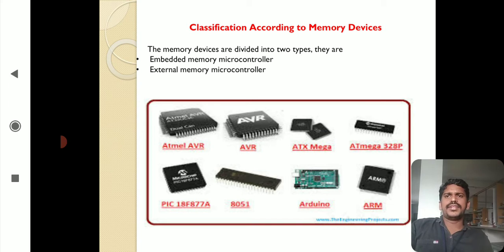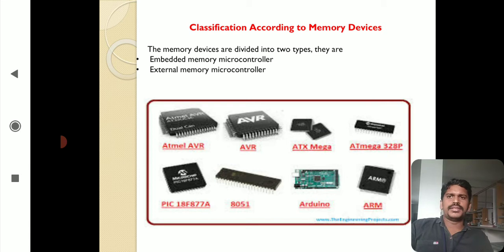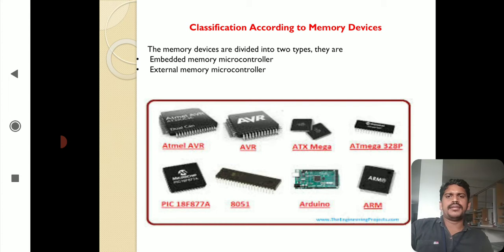In another classification, we look at memory devices. The memory devices are divided into two types: embedded memory controllers and external memory controllers. Embedded memory controllers have memory inbuilt in the microcontroller chip, while external memory microcontrollers communicate with other peripherals like input or output devices. External memory controllers are also used in ICs and PCs. Examples include ATMEL and AVR families.